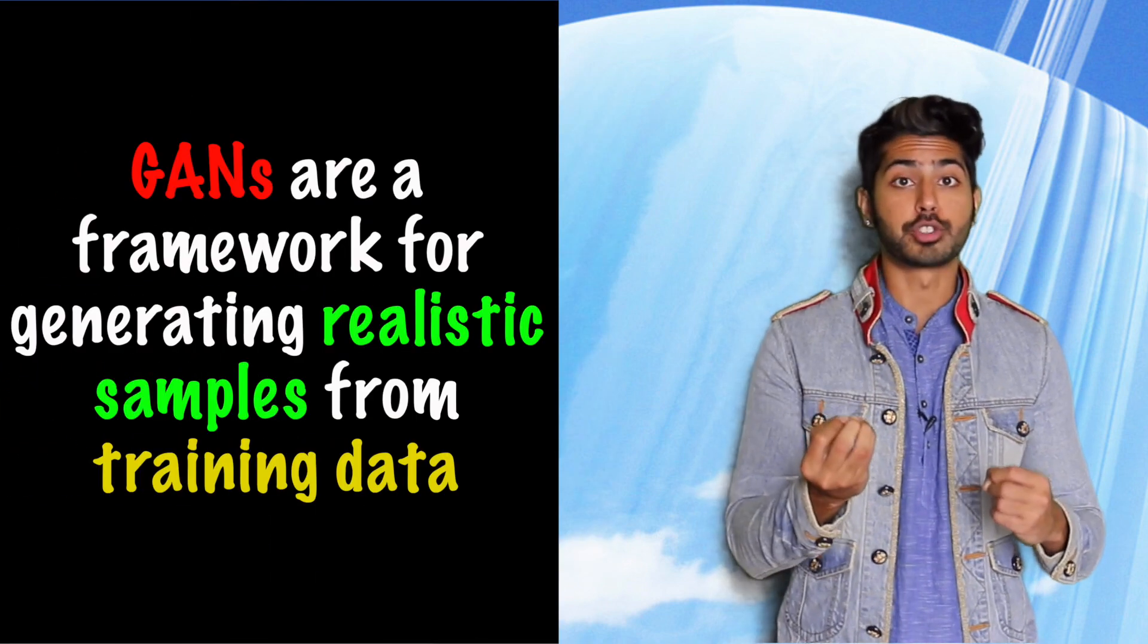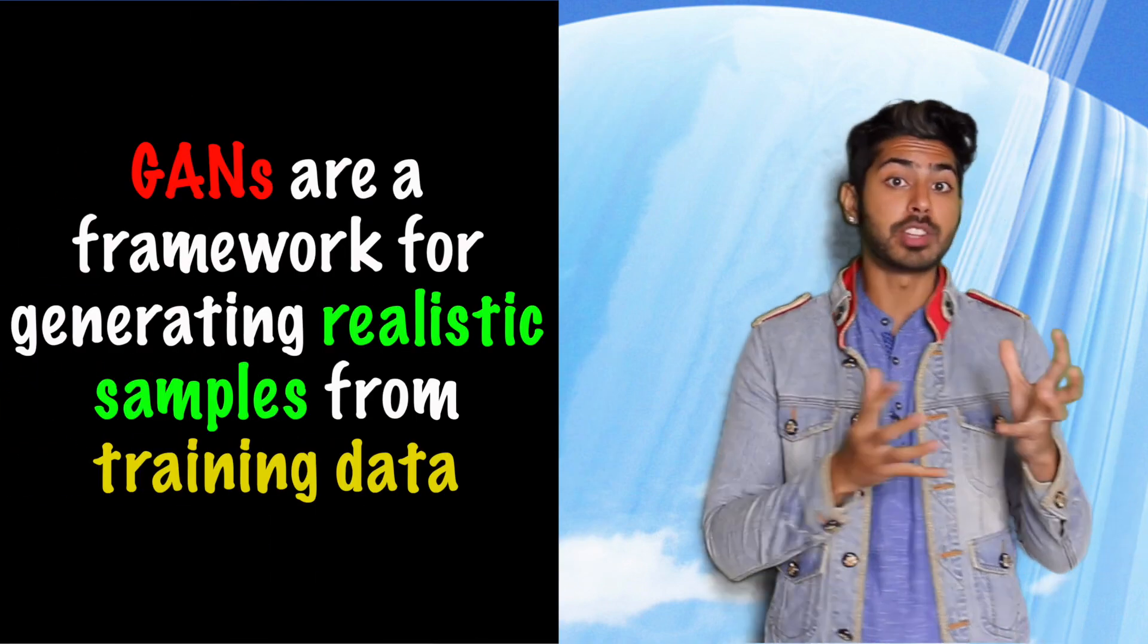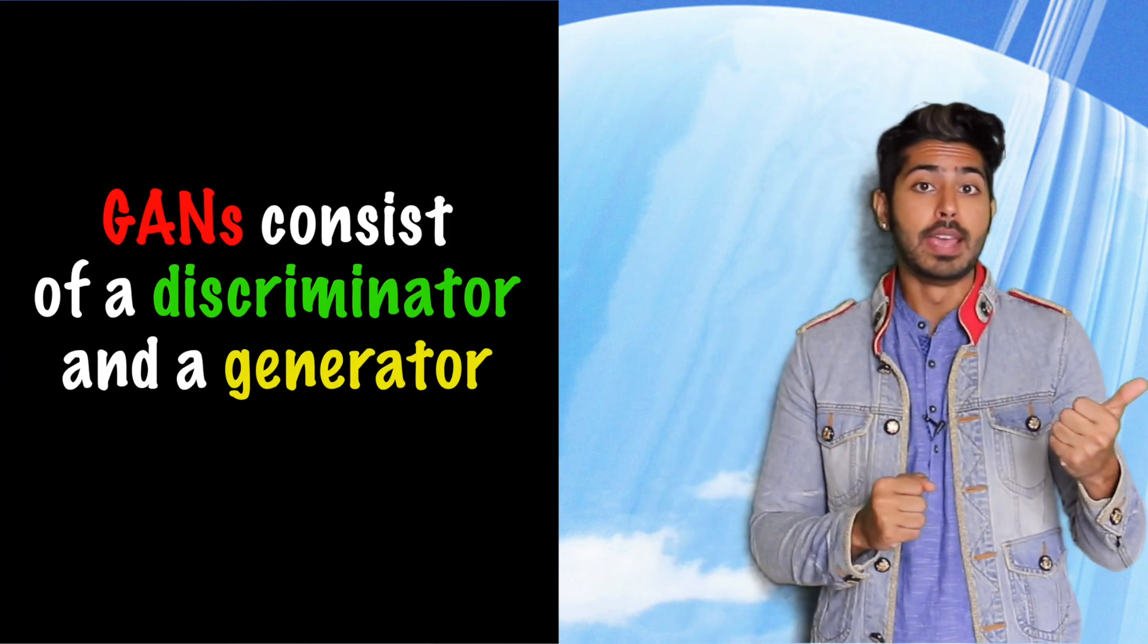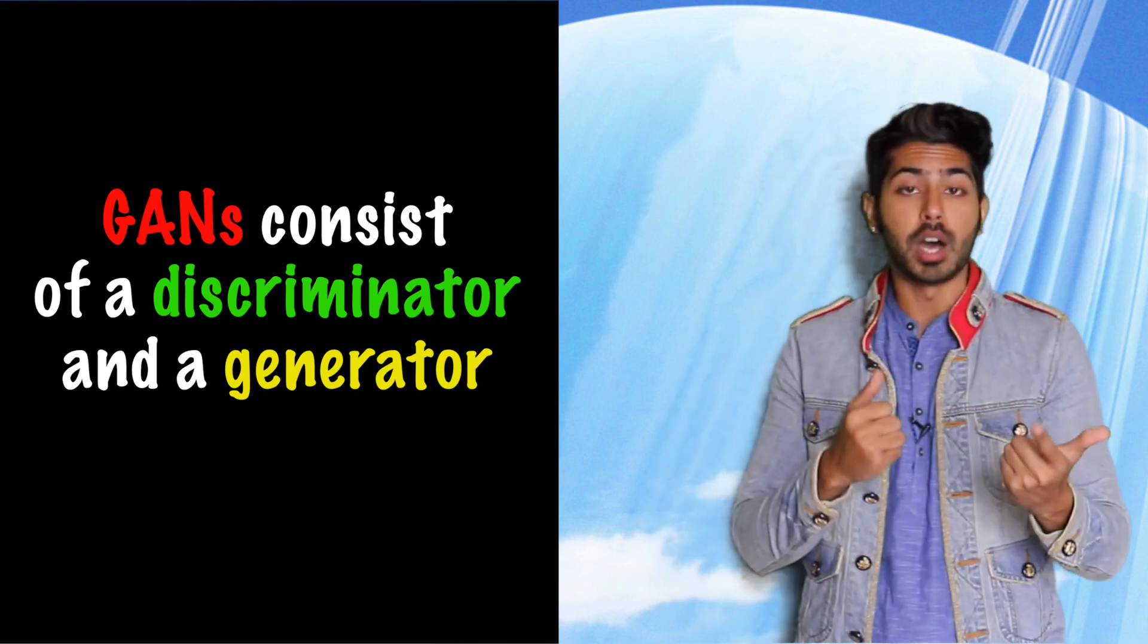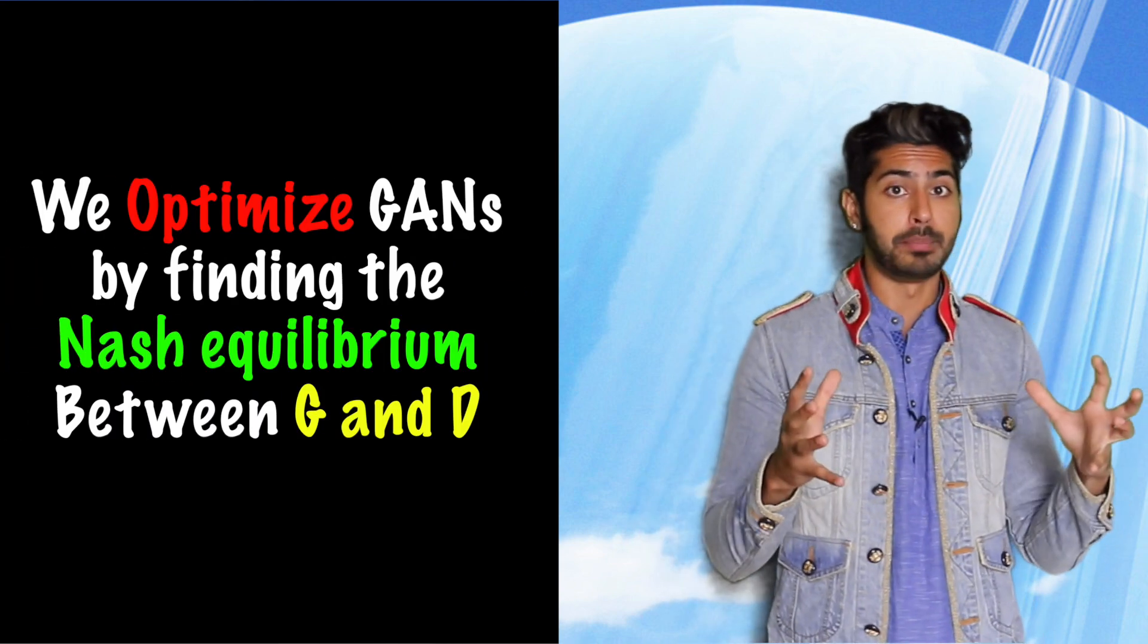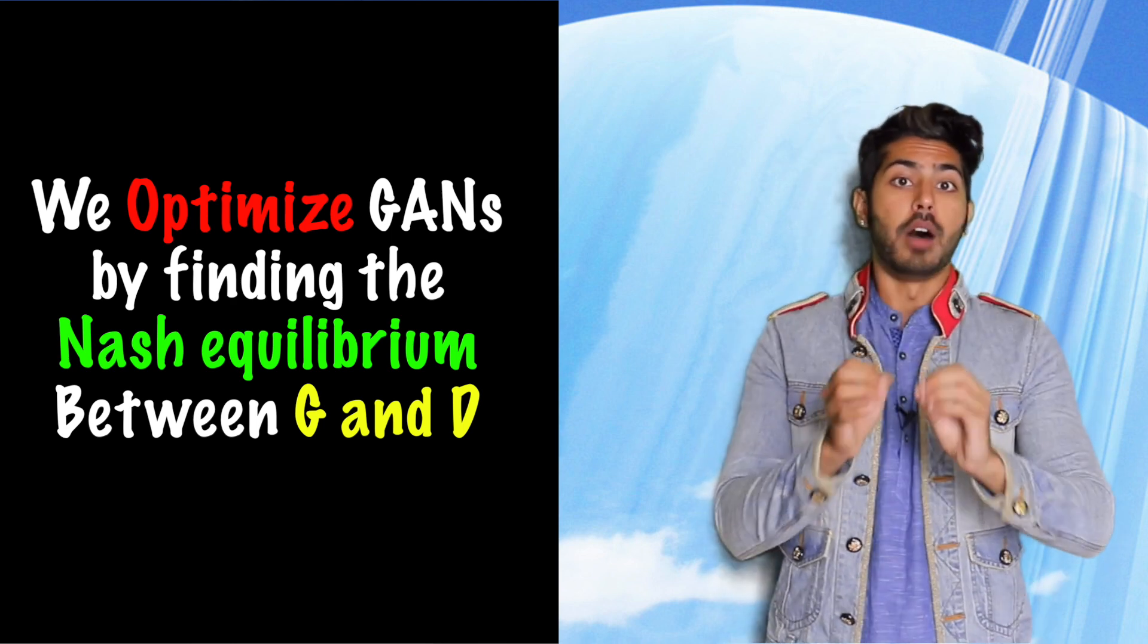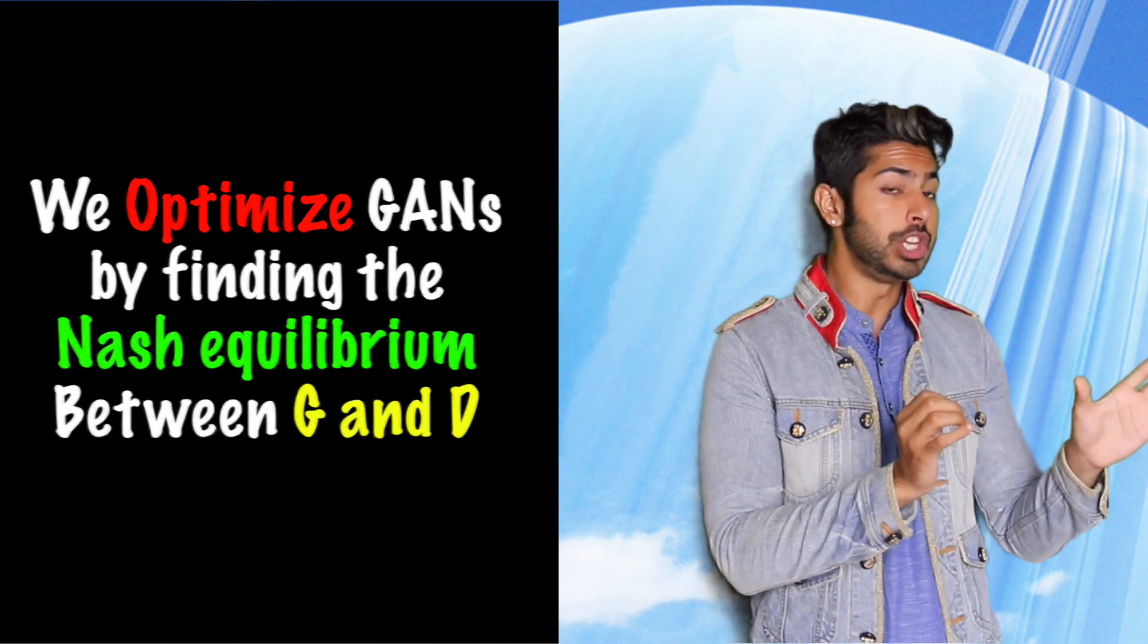Generative adversarial networks are a framework for generating realistic samples from random noise. They consist of two neural nets, a generator that creates fake samples, and a discriminator that tries to judge if those samples are real or fake. And we optimize them through back propagation, which helps find the Nash equilibrium of the minimax game between both G and D.